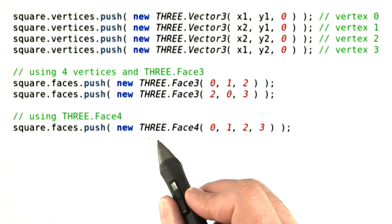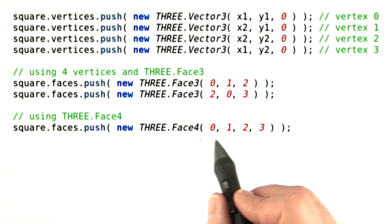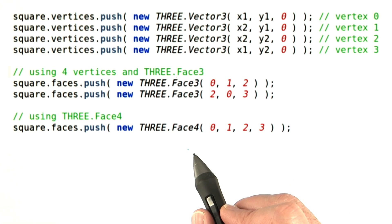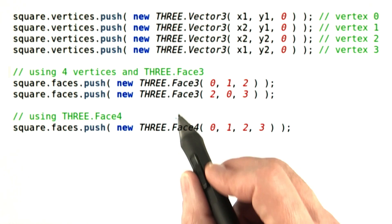It turns out that the 3.js library happens to support a four point face, so you could just use one face like this. That said, the way that WebGL, DirectX, and other low level APIs work is to define only triangles.